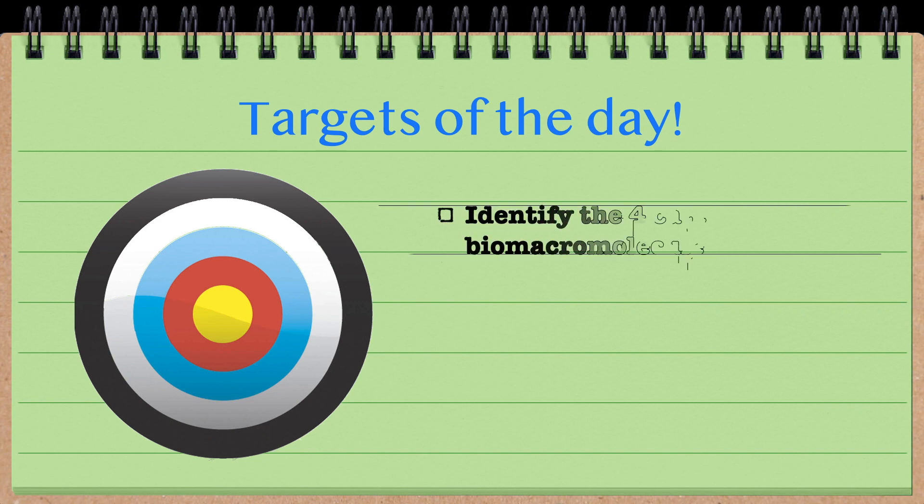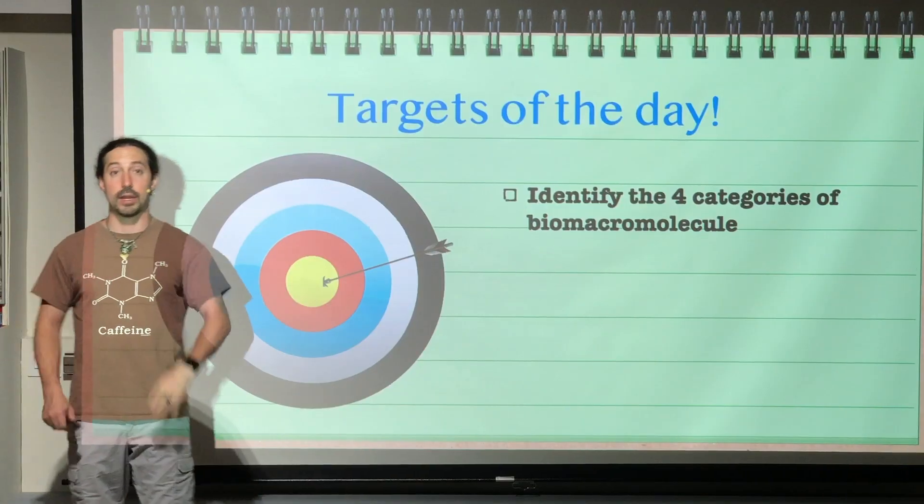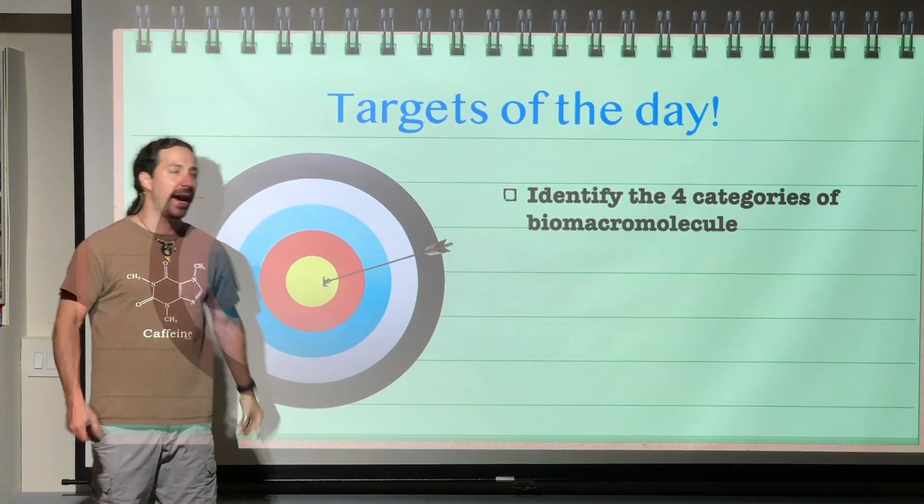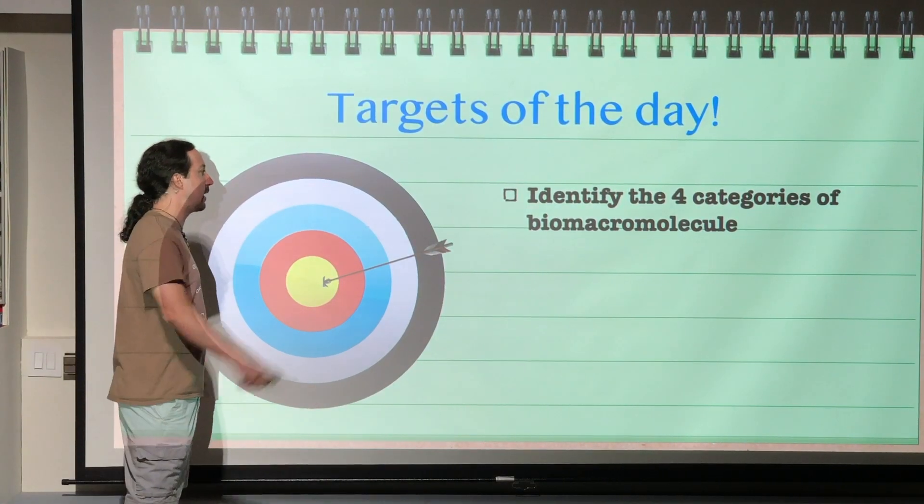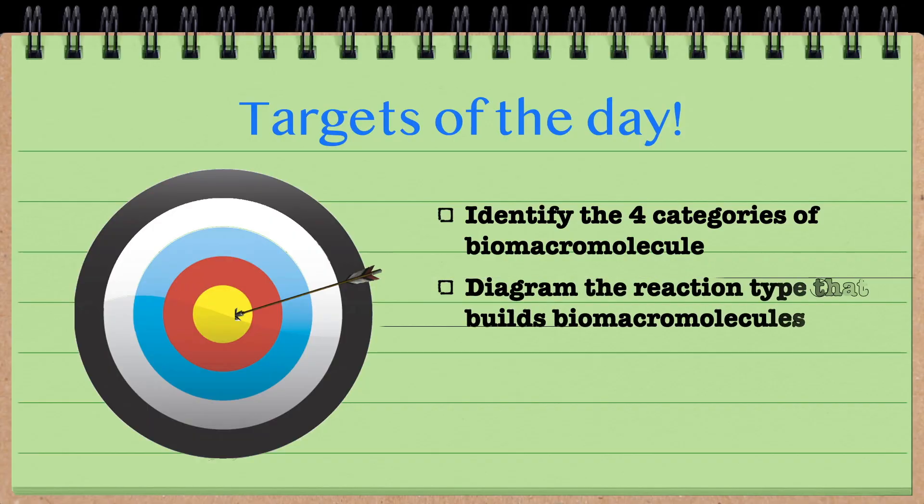Targets of the day. First off, identify the four categories of biomacromolecules. Clearly, that means there are four of them, and you should be able to identify them at the end of all of this. Next, you should be able to diagram the reaction type that builds these types of molecules.